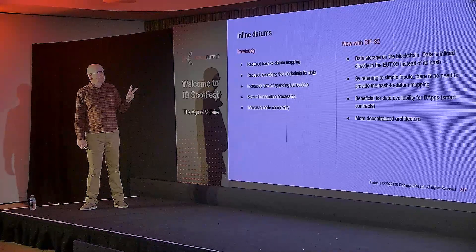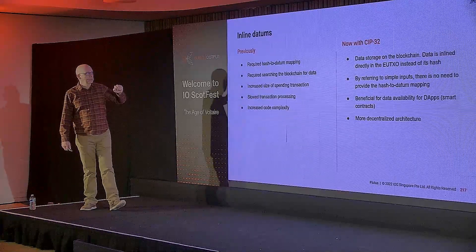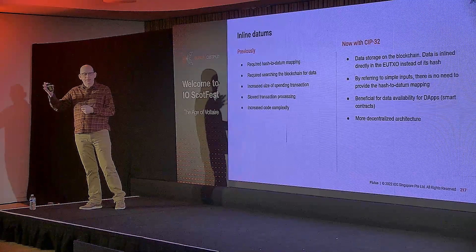CIP32: inline datums. This one gets a little more technical. In the old version, you don't actually store data on a UTXO — the only thing you can store is a hash. That means any off-chain code interacting with this has to keep a map from the hashes to the data values, which is fiddly bookkeeping off-chain. CIP32 allows you to put the data itself directly into the UTXO, so it becomes available from the on-chain UTXO without having to do all that off-chain work.